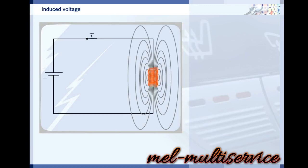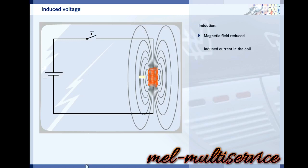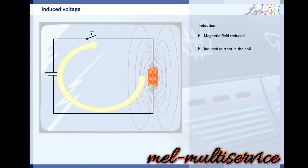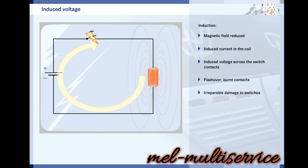Electromagnetic components are often used in vehicle electrical systems. These include electric motors, relays and solenoid valves, all of which contain magnetic coils and exhibit the phenomenon of induction. When the coil is switched off, the magnetic field is reduced. The energy in the magnetic field allows current to pass through the coil, and the current builds up at the switch contacts. This generates an induced voltage which can briefly be many times higher than the operating voltage, causing flashover at the switch contacts, burning the contacts and potentially destroying electronic switches.